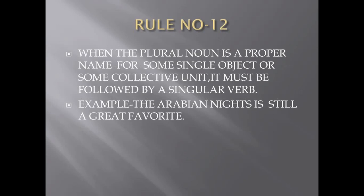Rule number twelve says: when a plural noun is a proper name for some single object or collective unit, it must be followed by a singular verb. If a plural noun is the proper name of a single object, we use a singular verb. Example: 'The Arabian Nights is still a great favourite.' We use the singular verb 'is', not 'are'.